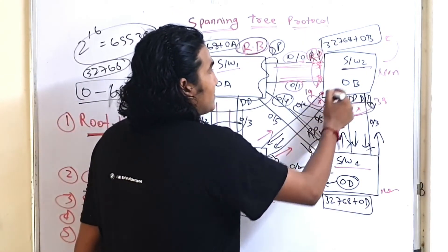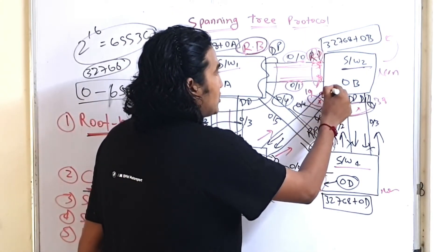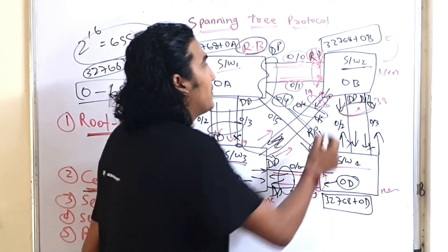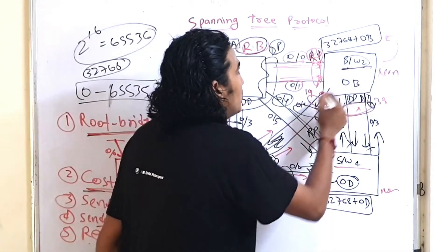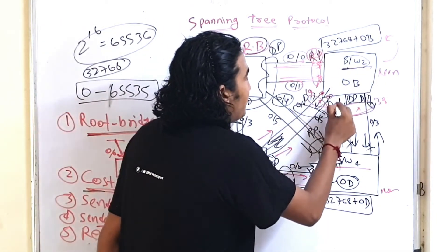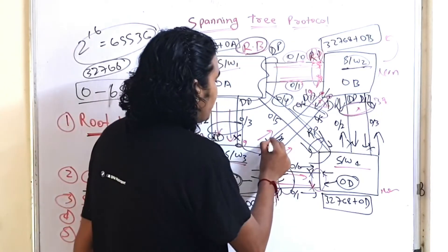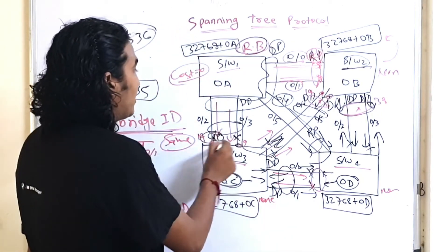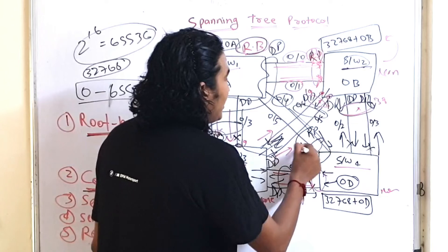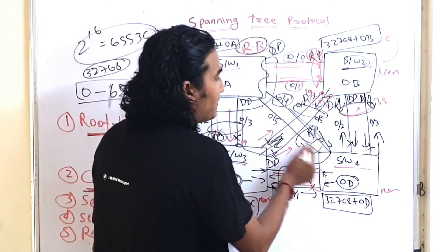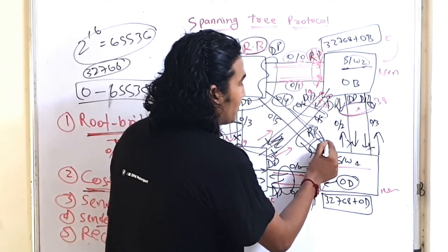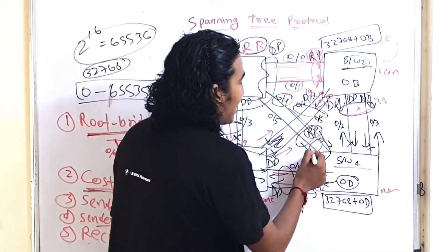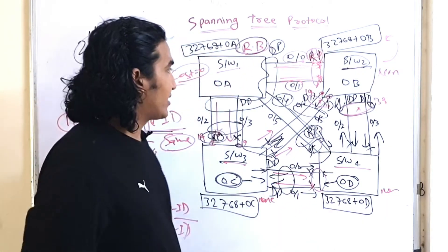On the link between Switch 2 and Switch 3, both switches are sending BPDUs. Switch 2 sends the superior BPDU. So Switch 2's port becomes DP and Switch 3's port becomes alternate, since the RP is already assigned on Switch 3.